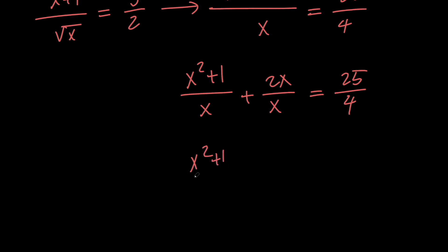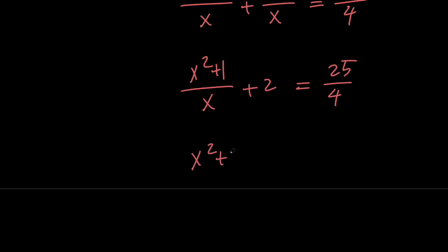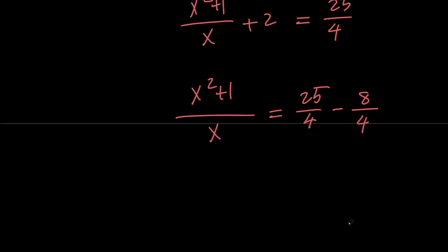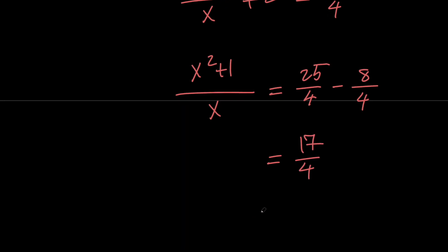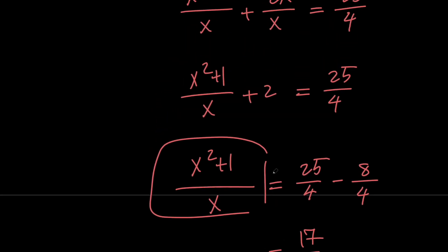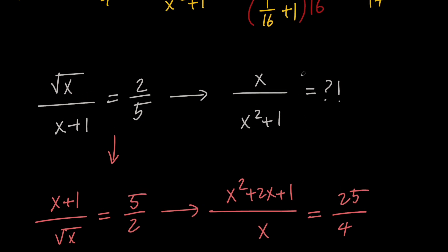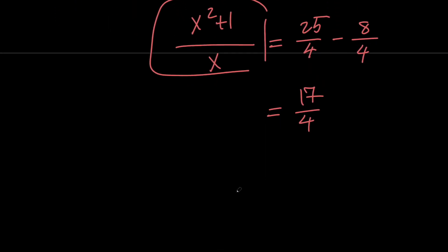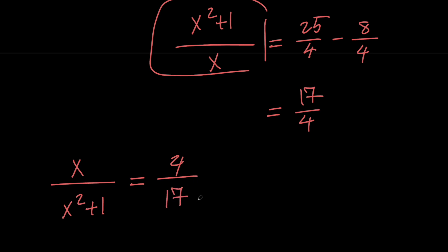So we have x squared plus 1 over x plus 2 equals 25 over 4. Next let's subtract 2 from both sides to get x squared plus 1 over x equals 25 over 4 minus 8 over 4, which equals 17 over 4. Now notice that this expression is the reciprocal of the expression we want to find. So x over x squared plus 1 equals 4 over 17, and we are done with this video.